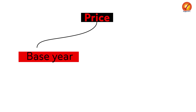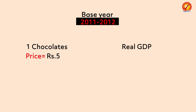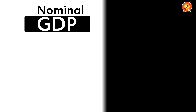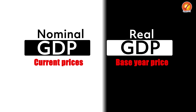When we calculate real GDP, the number of chocolates remains the same because that is the quantity produced, but the price we use will be of a base year — a reference year. So if the base year was 2011-2012, and in 2011-2012 the price of one chocolate was 5 rupees, then the real GDP would be 10 chocolates into 5 rupees, that is 50. So the nominal GDP is 100, but the real GDP is 50. Nominal GDP takes into account current prices, while real GDP takes into account base year prices.